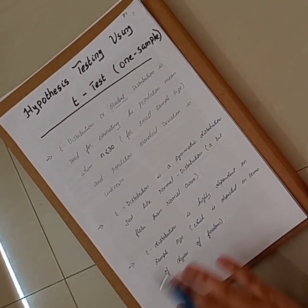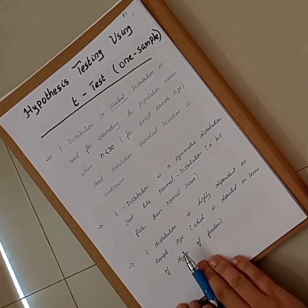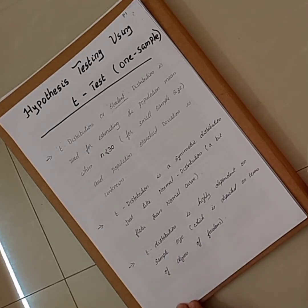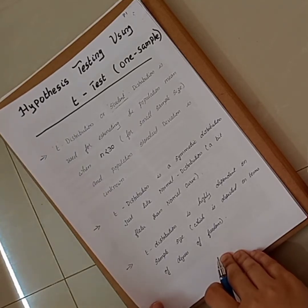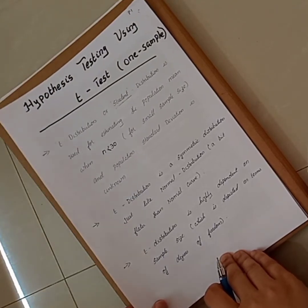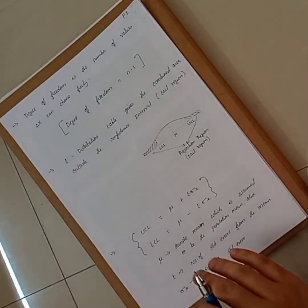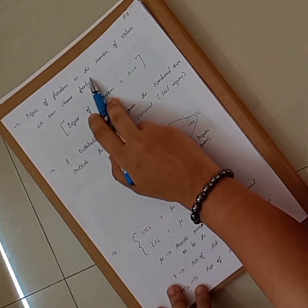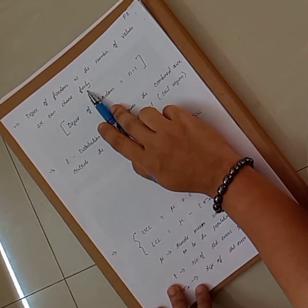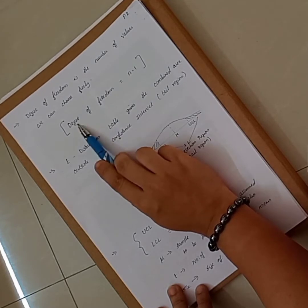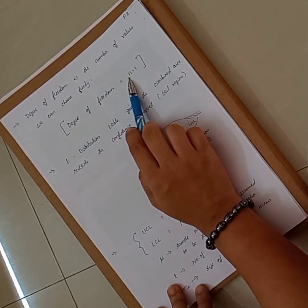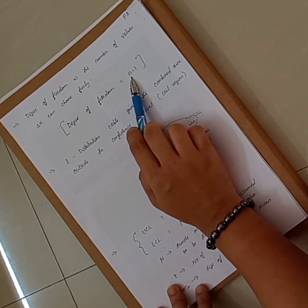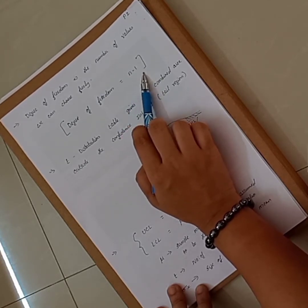T-distribution is highly dependent on sample size, which is depicted in terms of degree of freedom. In most questions it will be given as sample size only, so we will have to find the degree of freedom. The formula is: degree of freedom equals n minus 1, which represents the number of values we can choose freely.